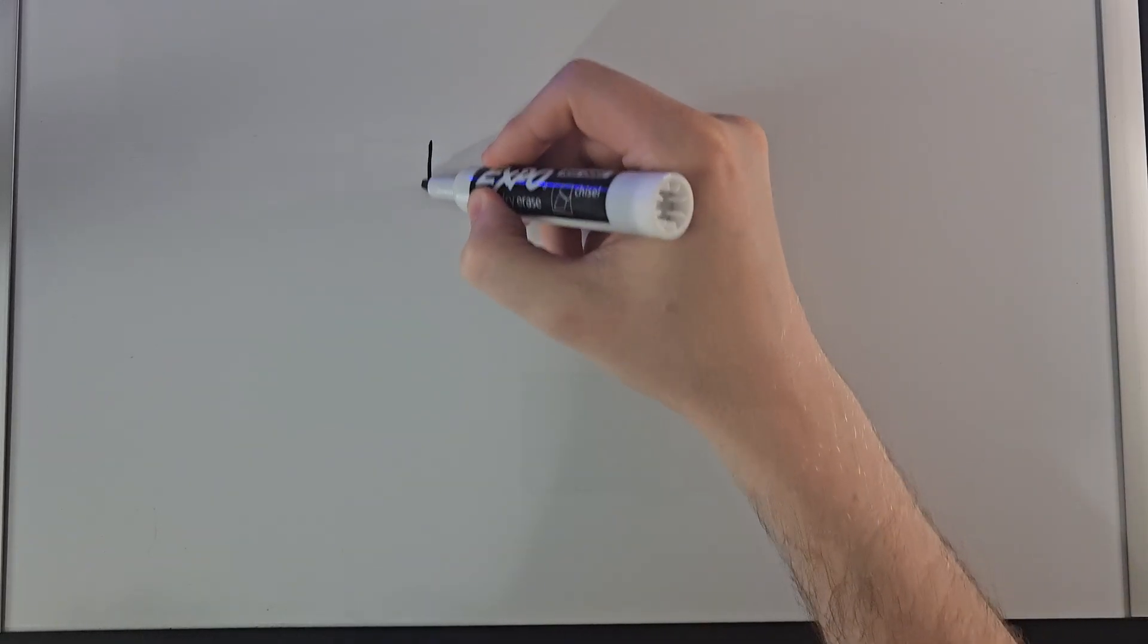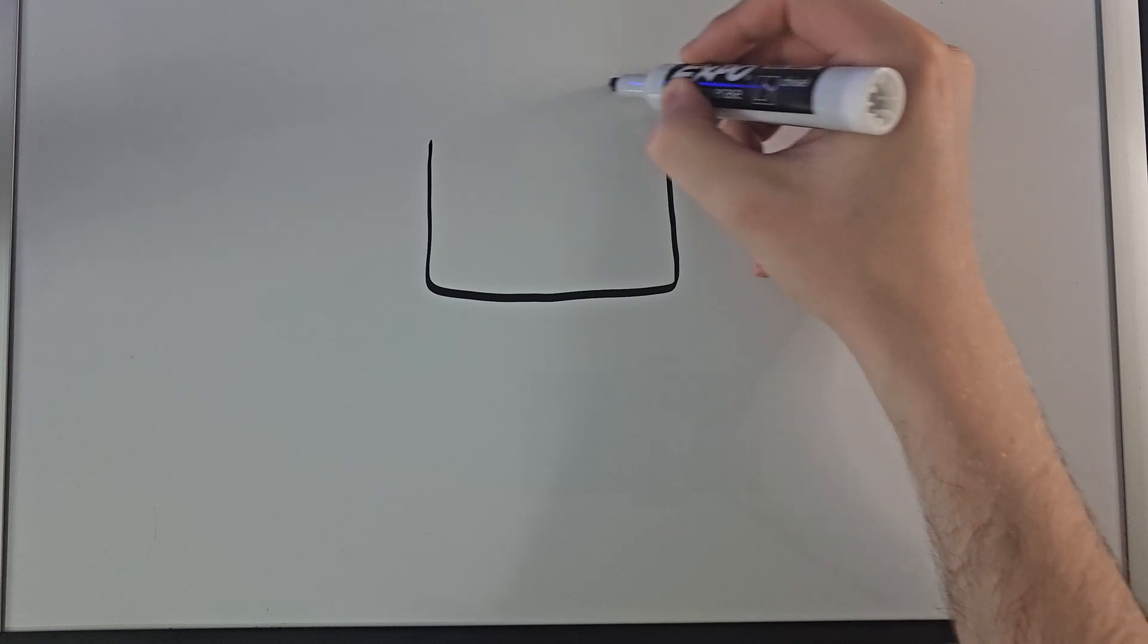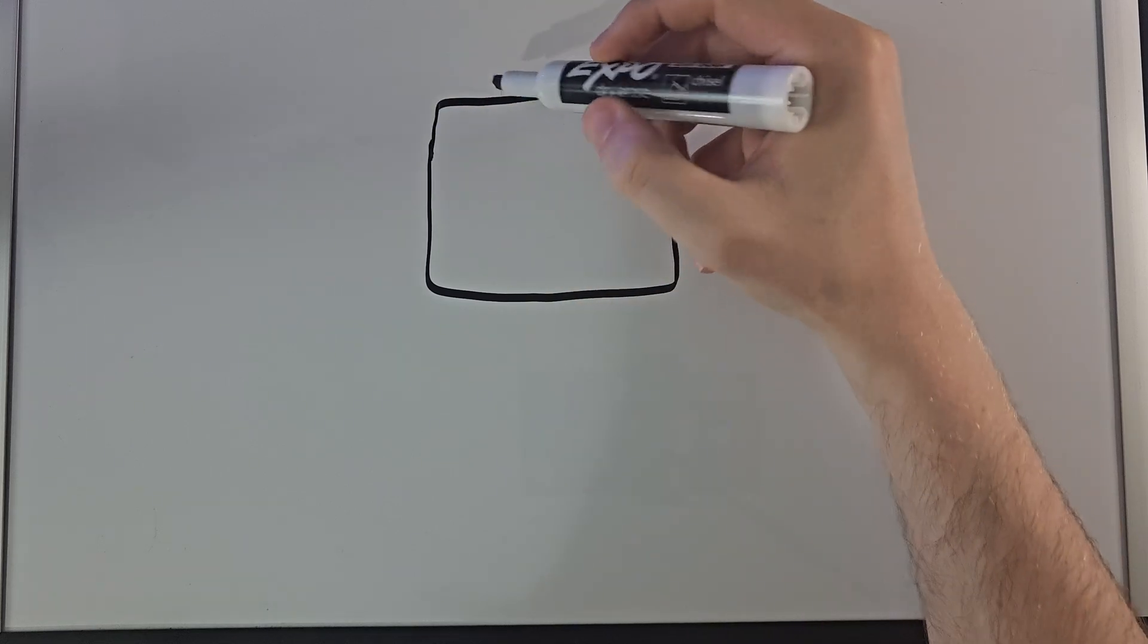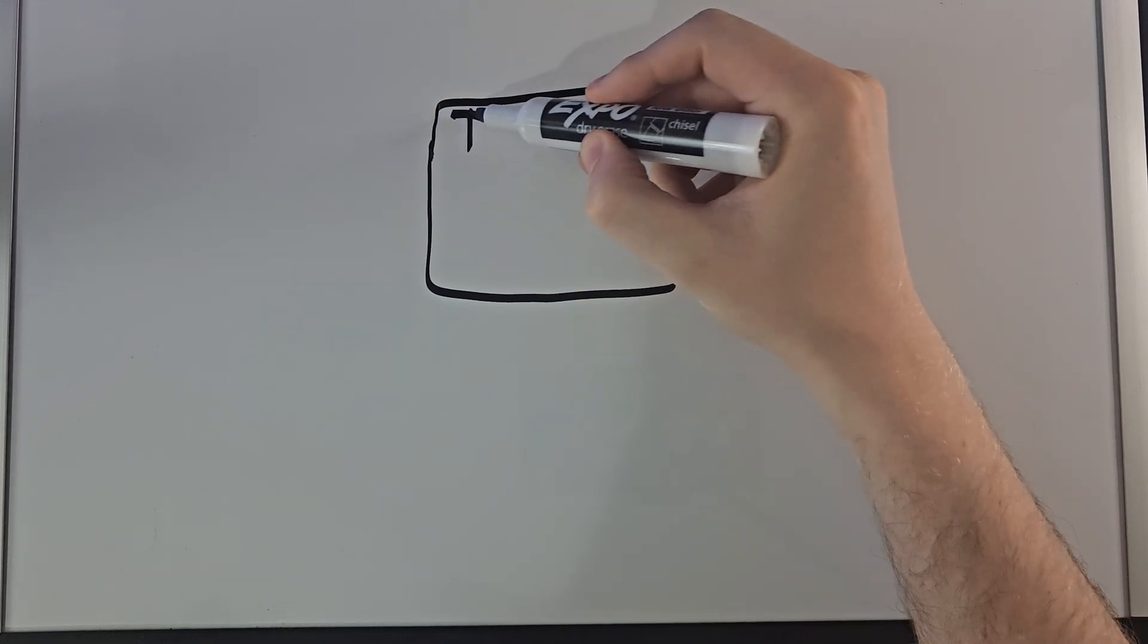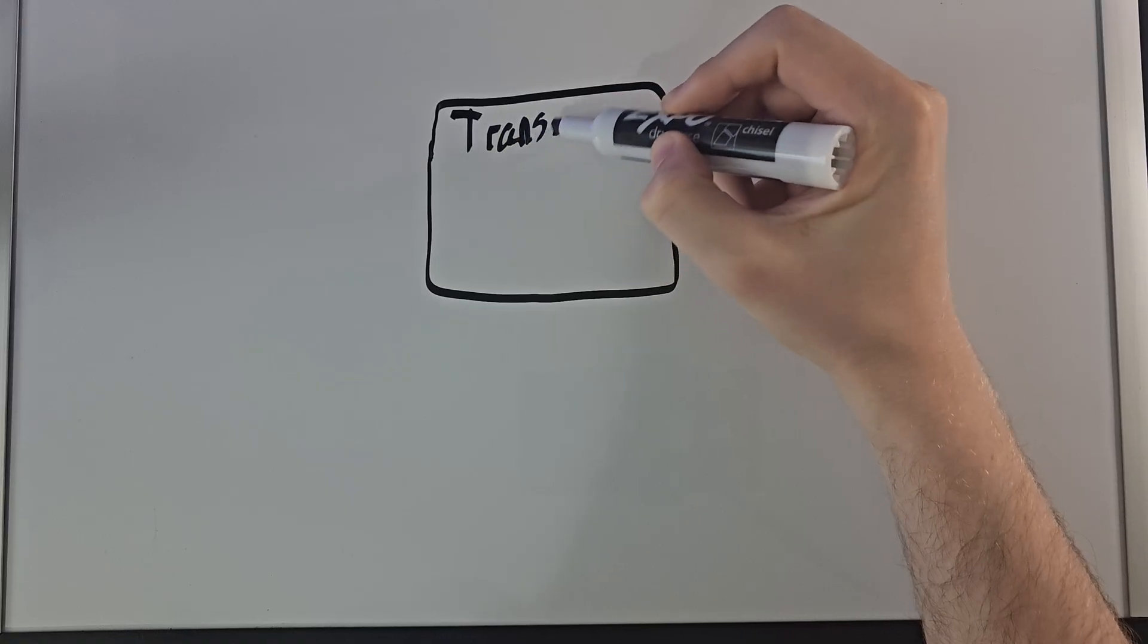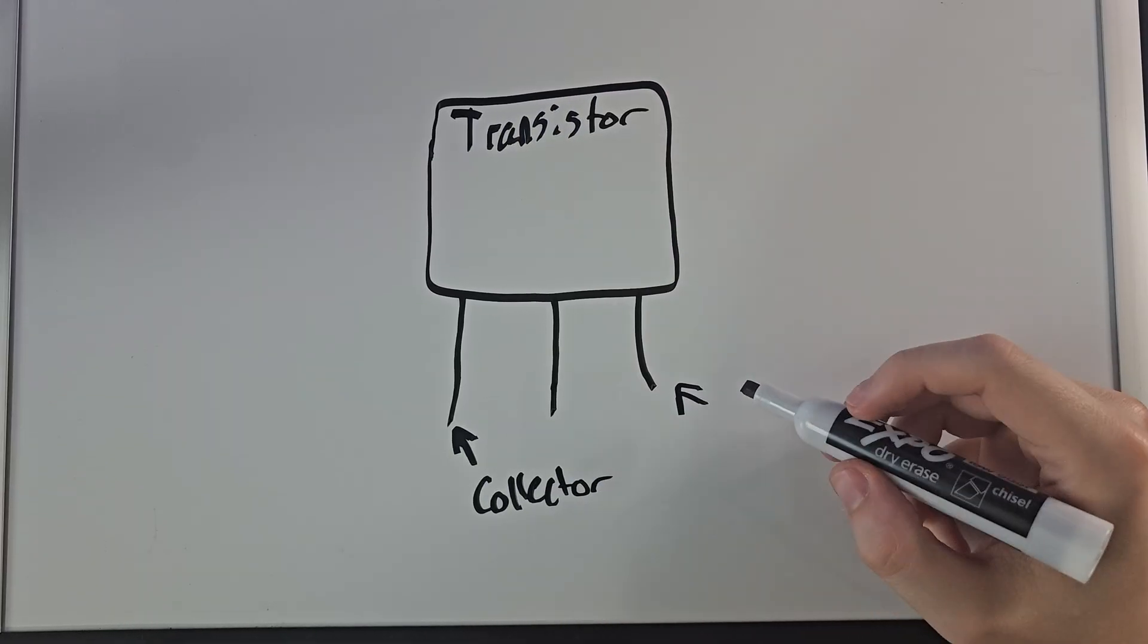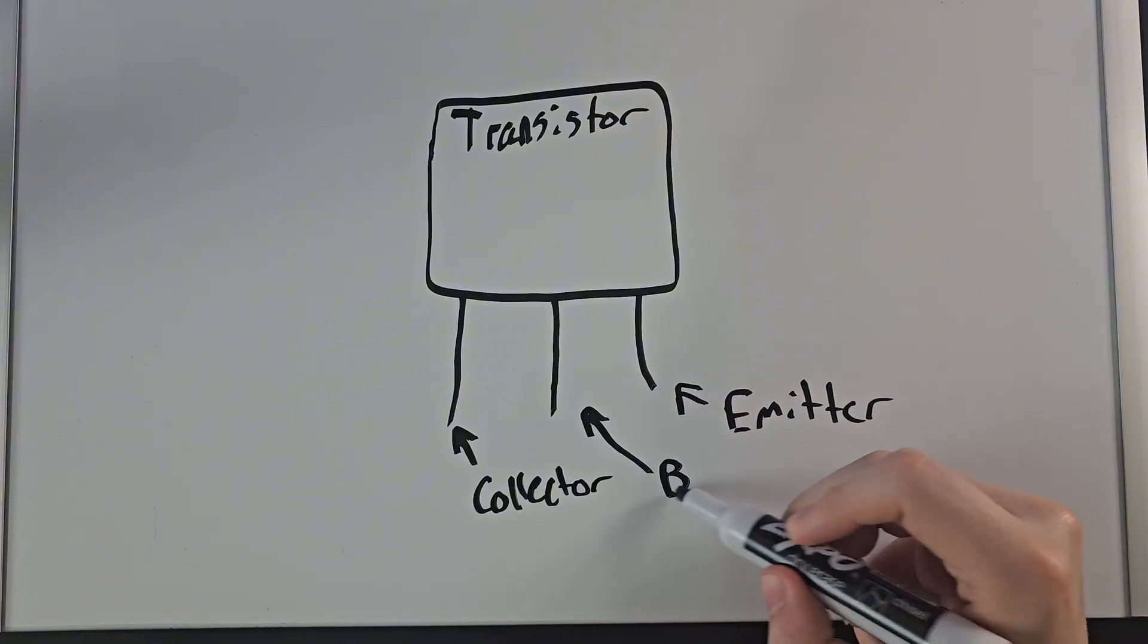A suggestion that I had gotten was, how do transistors work? I don't want to be confusing, so I'm going to use simple terms and explain everything with the whiteboard. I'm drawing the transistor as such. It has three pins, the emitter, the base, and the collector.